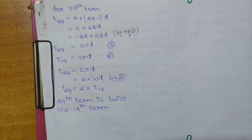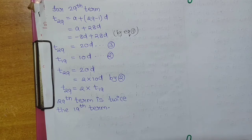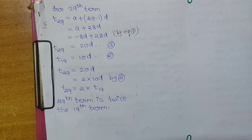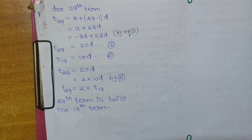This proves that the 29th term is twice the 19th term. The question looks complicated but it is not. Hope you don't have any doubt — if you do, you can ask in the comment section. Thank you; if you like the video, please share and subscribe.